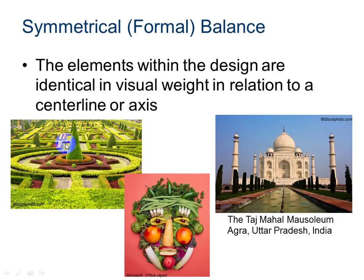Here are three examples of symmetrical or formal balance. The elements within each design are identical in visual weight in relation to a center line or axis. If we draw a line through the middle of each picture, we can see balance from the left to the right. Even here with the food making a face — if we draw a line through the center, we have balance from the left side to the right. And we can see here in the Taj Mahal that if we draw through the center, we have balance on both sides.